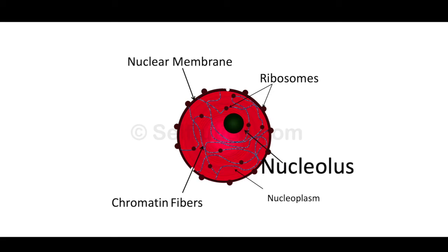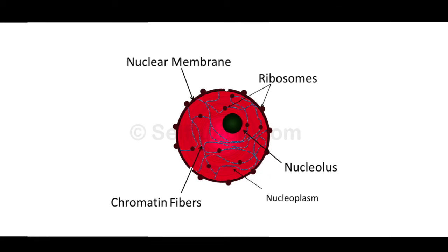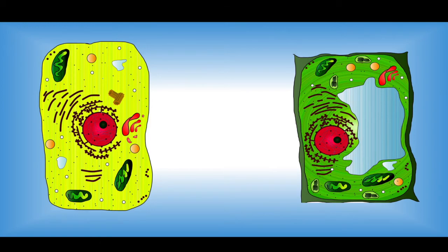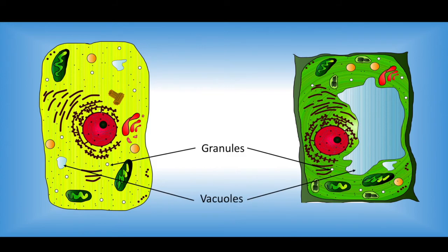The non-living parts of the cell are granules and vacuoles. Granules are small particles in the cytoplasm that store food particles such as starch, glycogen, and fats. Vacuoles are clear spaces in the cytoplasm filled with water and various substances in solution. A single membrane called the tonoplast bounds these bubble-like sacs. In plant cells, vacuoles are usually quite large and the liquid they contain is called cell sap, which contains proteins, minerals, and organic acids. Vacuoles provide turgidity and rigidity to the cell. Animal cells do not have such prominent vacuoles; they are fewer in number.